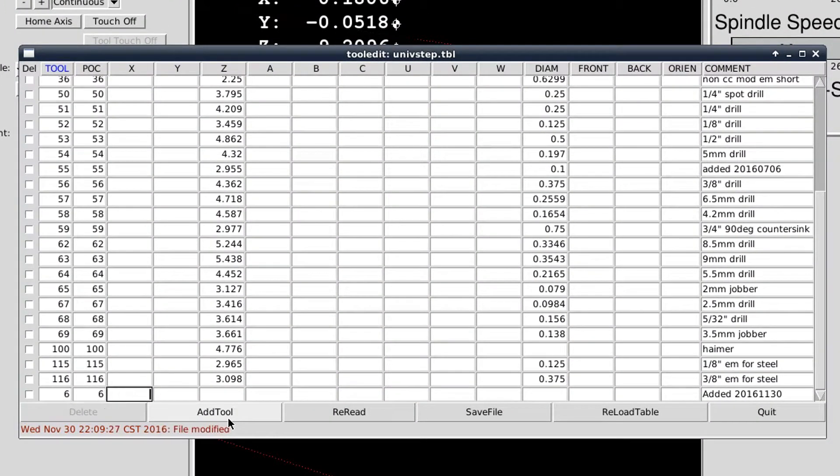This is the tool table in LinuxCNC. We add a new tool to our library, numbered 6, with a measured length of 2.500 inches and a diameter of 1.50 inches or 38 millimeters and a meaningful description.